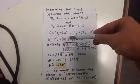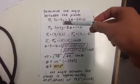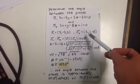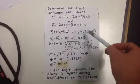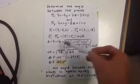n1 dotted with n2 is the magnitude of n1 magnitude of n2 cos theta. So 3 times 2 is 6, negative 5 times 1 is negative 5, 2 times negative 8 is negative 16.